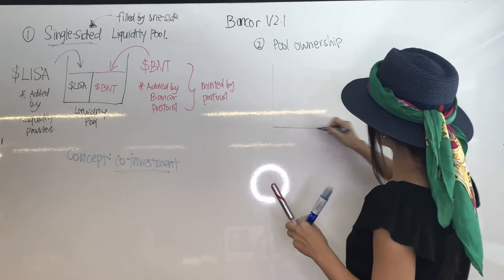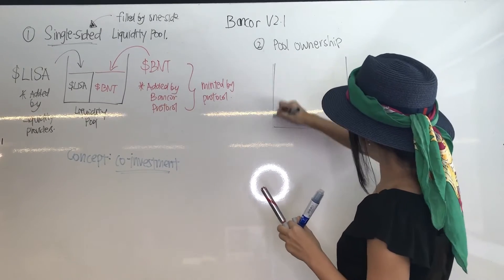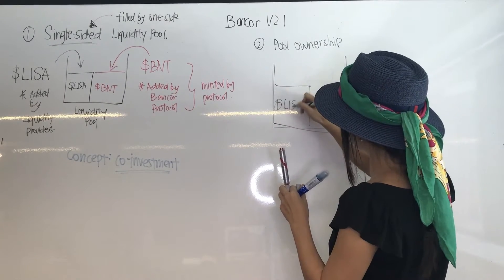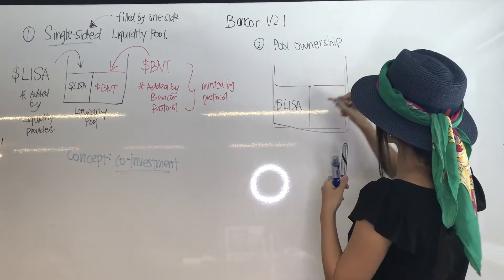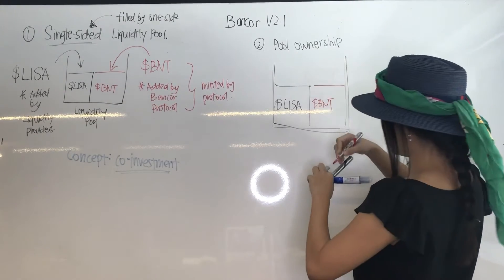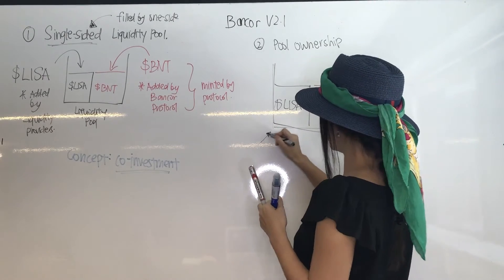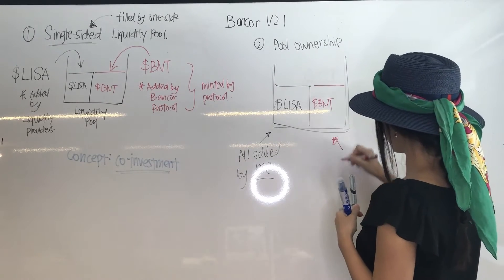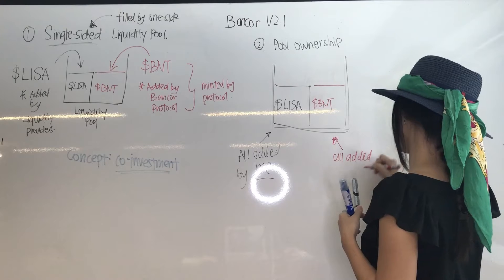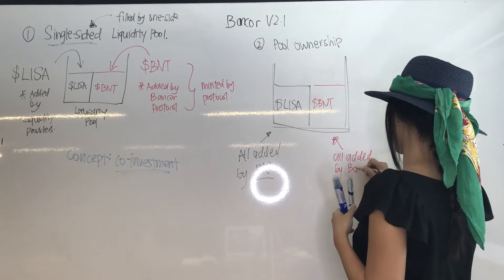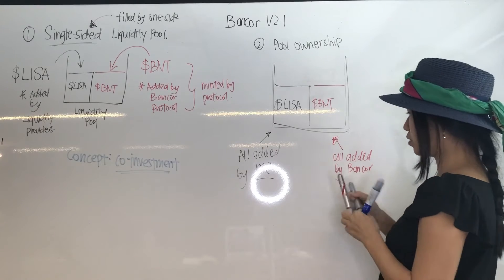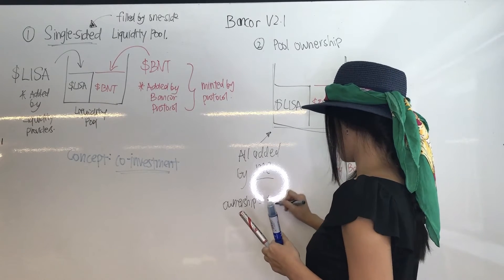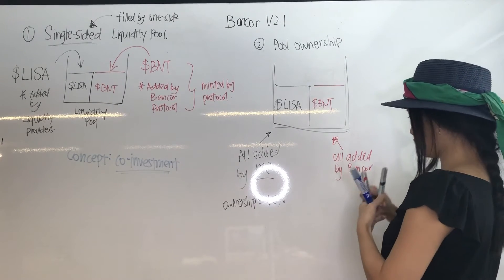Now, part two: let's understand pool ownership — another type of token available in Bancor's protocol. We have a pool, half of it is Lisa token and the other half is the BNT (Bancor token). To keep things simple, all the Lisa tokens are added by me and all the BNT tokens are added by the protocol itself. That means I own 50% of the pool and Bancor the protocol also owns 50% of the pool.